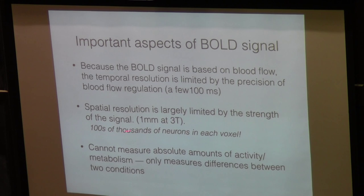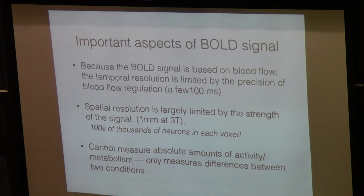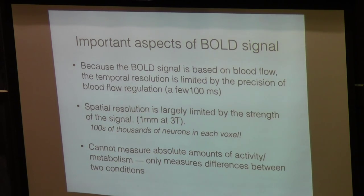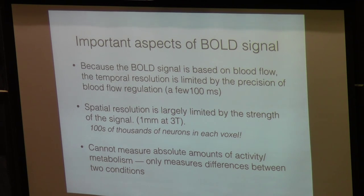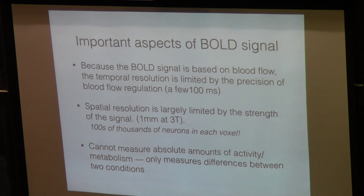Spatial resolution is limited by the strength of the signal and the strength of the magnet. We're looking at a resolution of millimeters — between 1 to 3 millimeters for a given voxel — and within one of those voxels you're looking at hundreds of thousands of neurons. So you have a very coarse signal of what's happening in the brain, as opposed to recording from single neurons. If we do see something happening in the brain it's quite remarkable — it means a big population of neurons is firing to give us some activity.